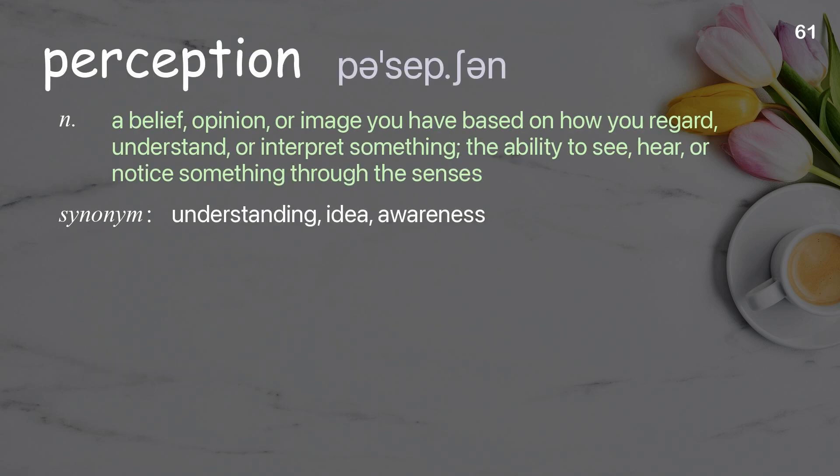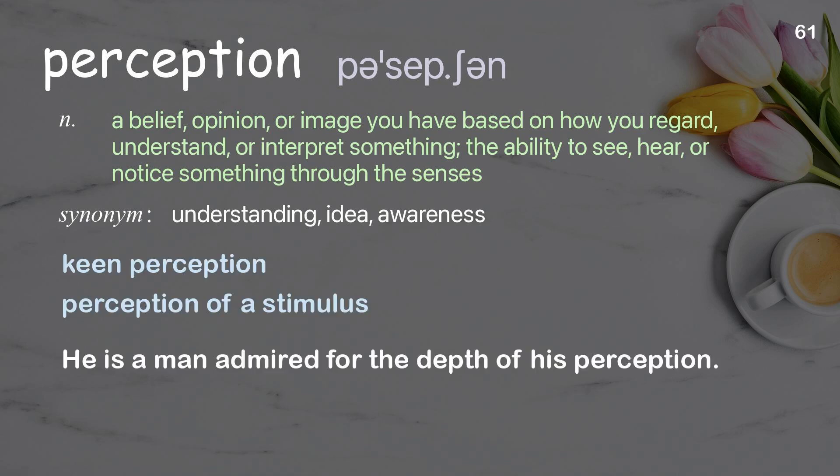Perception: A belief, opinion, or image you have based on how you regard, understand, or interpret something; the ability to see, hear, or notice something through the senses. Examples: Keen perception. Perception of a stimulus. He is a man admired for the depth of his perception.